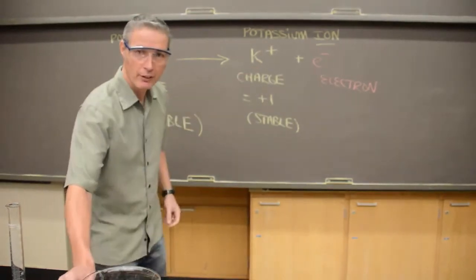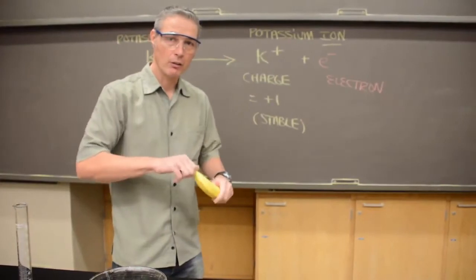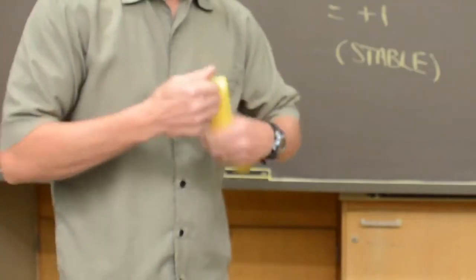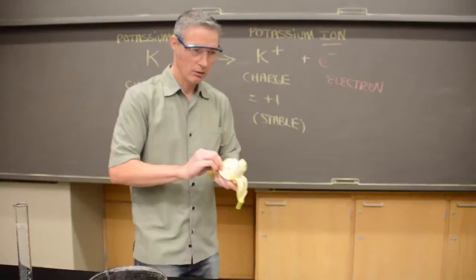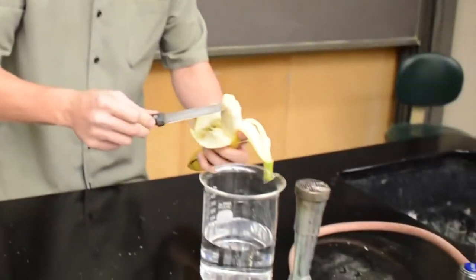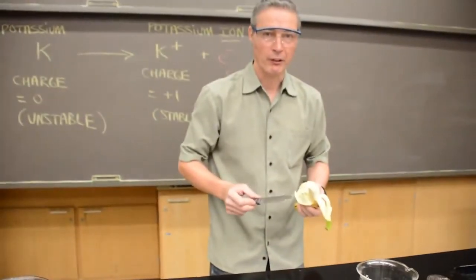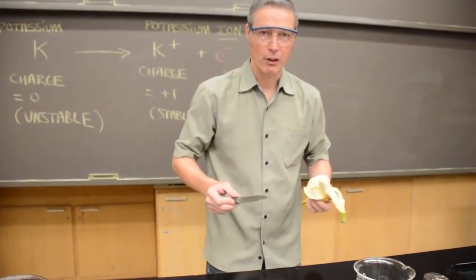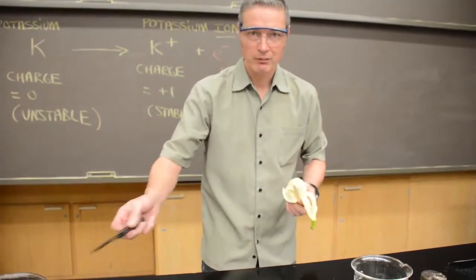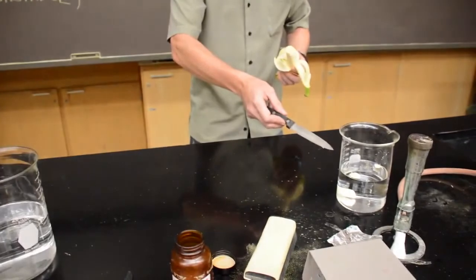Now you know what else has potassium? It's a banana. And so let's see what happens when we take a hunk of this banana and put it into water. Nothing, because it's already stable. Something, nothing. Something, nothing.